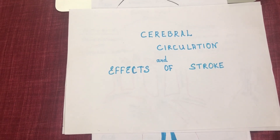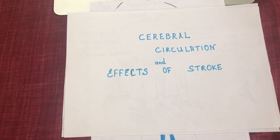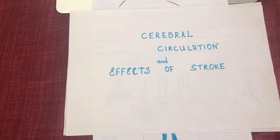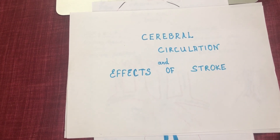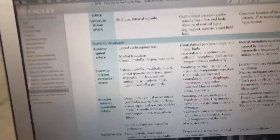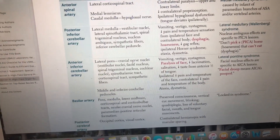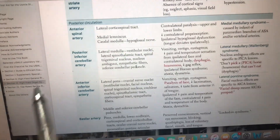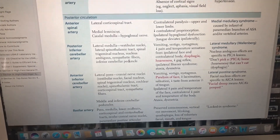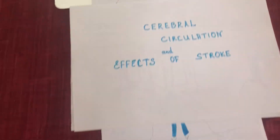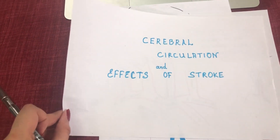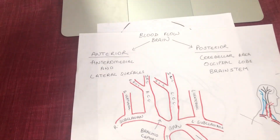Hey guys, so this video is about the cerebral circulation and the effects of stroke. I've based this video on that terrible First Aid stroke table, where they have listed all the cerebral arteries and their lesions. I've really broken it down so that hopefully you won't have to memorize any of that, because when I was studying for Step 1, this literally gave me nightmares.